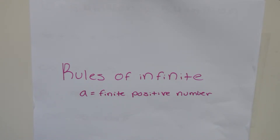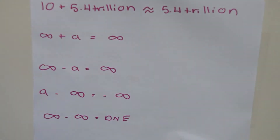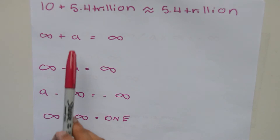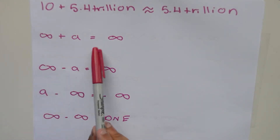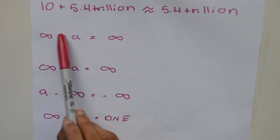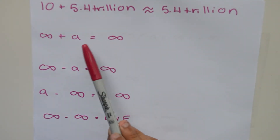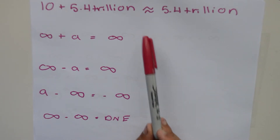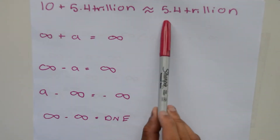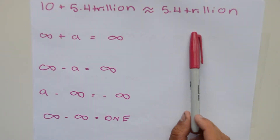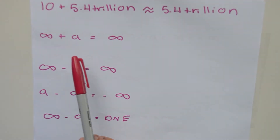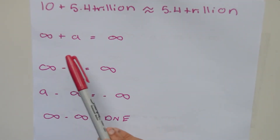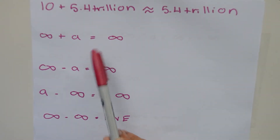When infinity is used in a calculation we must make our best effort to estimate the outcome. Note that 'a' equals a finite positive number. Our first rule is that a finite number added to positive infinity equals positive infinity. For example, 10 plus 5.4 trillion: 5.4 trillion is so much larger than 10 that adding 10 does not really change the value significantly — it's about equal to 5.4 trillion. In the same way, adding 10 to infinity makes 10 insignificant. This would even be the case if we added 5.4 trillion to infinity.